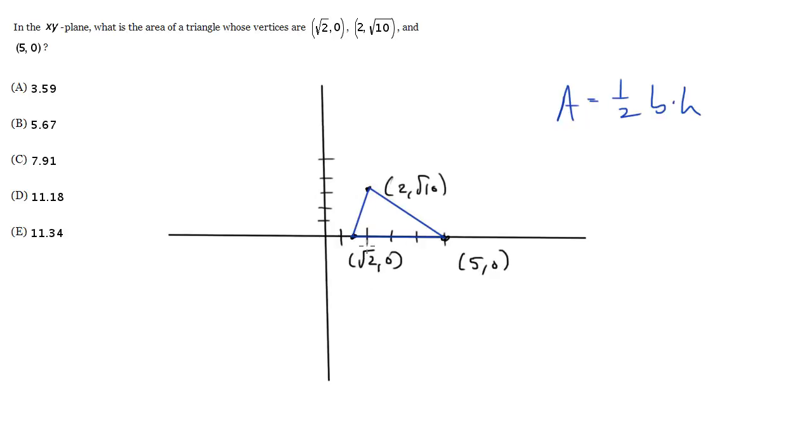If the square root of 2 is throwing you off, imagine if this were at 1, 0 right here. What would the distance be? Well, it would be 1, 2, 3, 4 units, and you can get that by doing 5 minus 1. So just because we've got a square root of 2 doesn't make it any different.